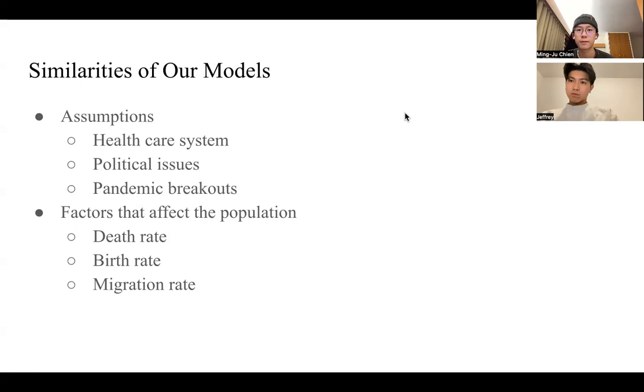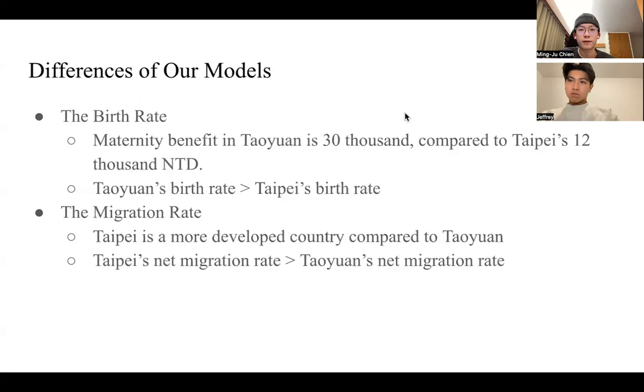Yet we predicted the birth rate and migration rate differently. We modeled the birth rate differently. The maternity benefit in Taoyuan is 30,000 NTD, compared to Taipei's 12,000 NTD. Therefore, the birth rate in Taoyuan in Jeffrey's model is much higher than mine, figured by a large incentive.